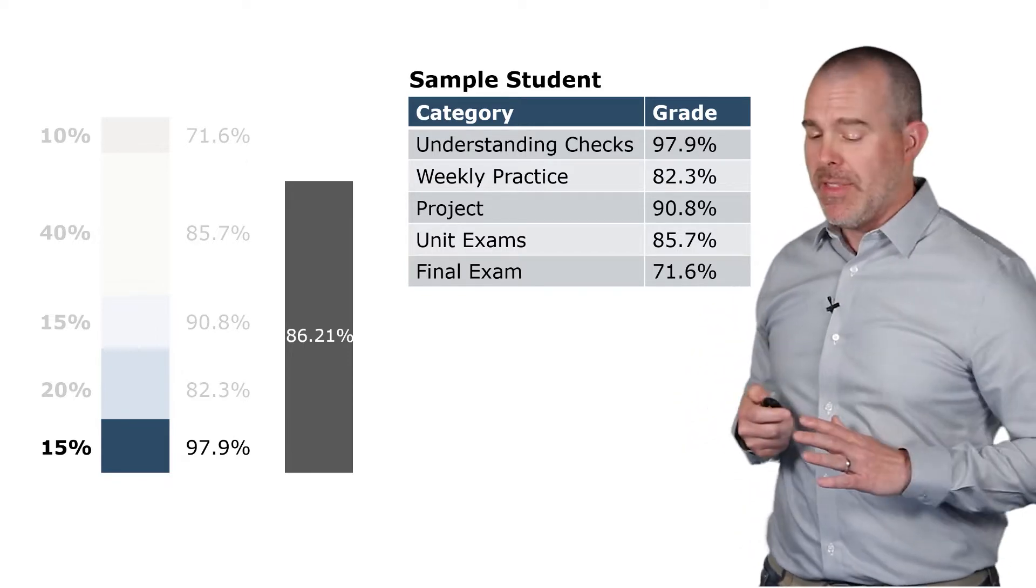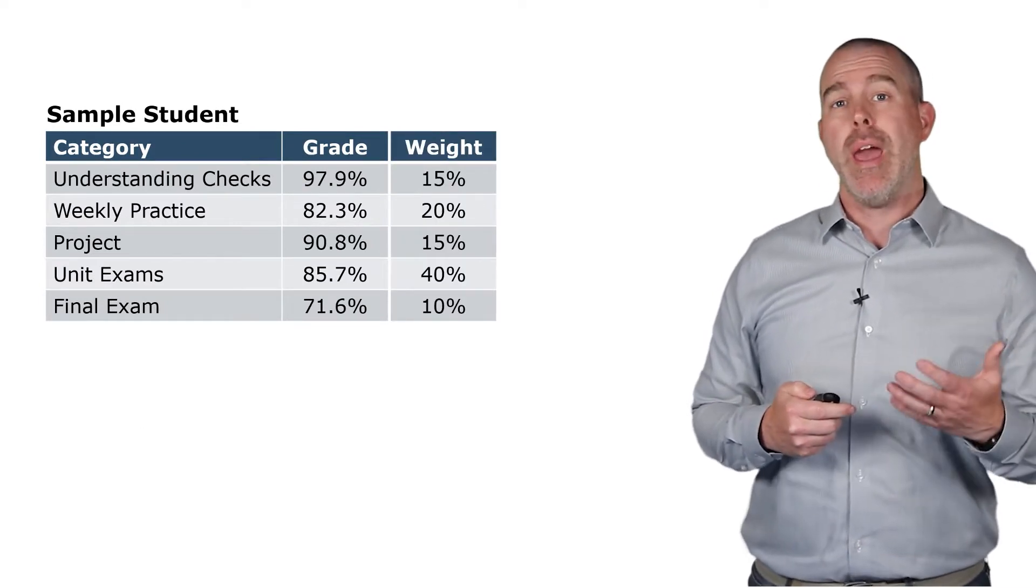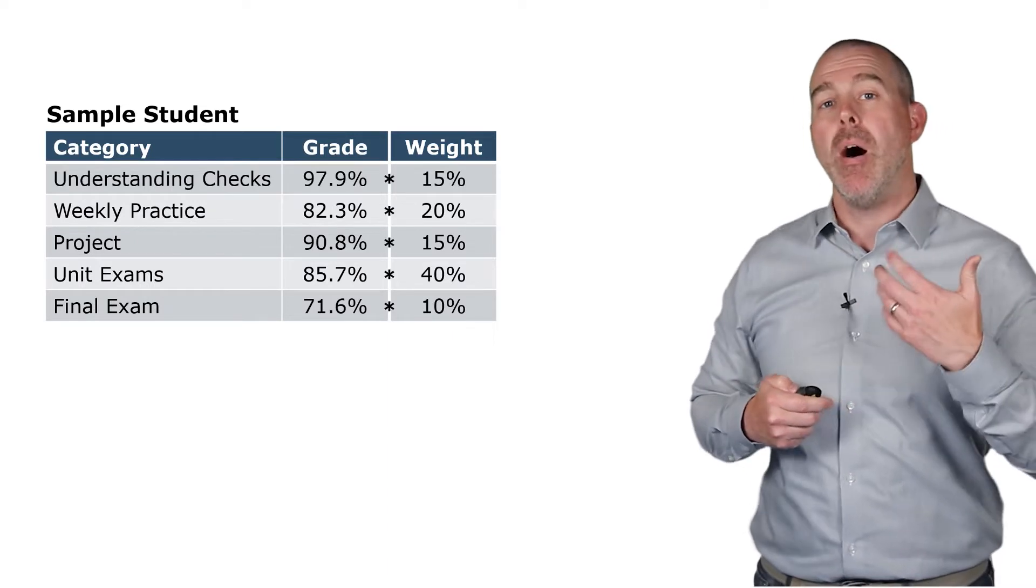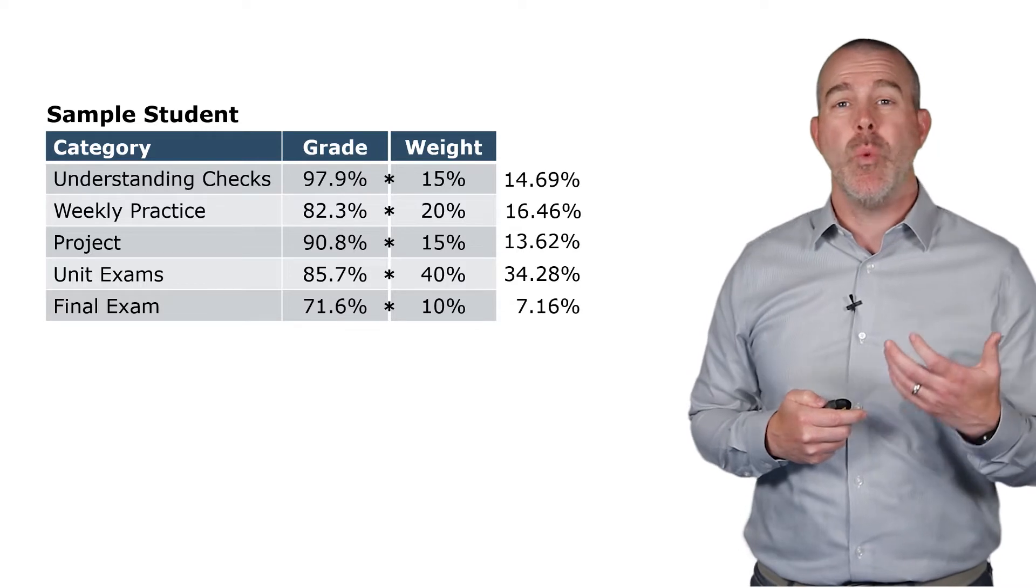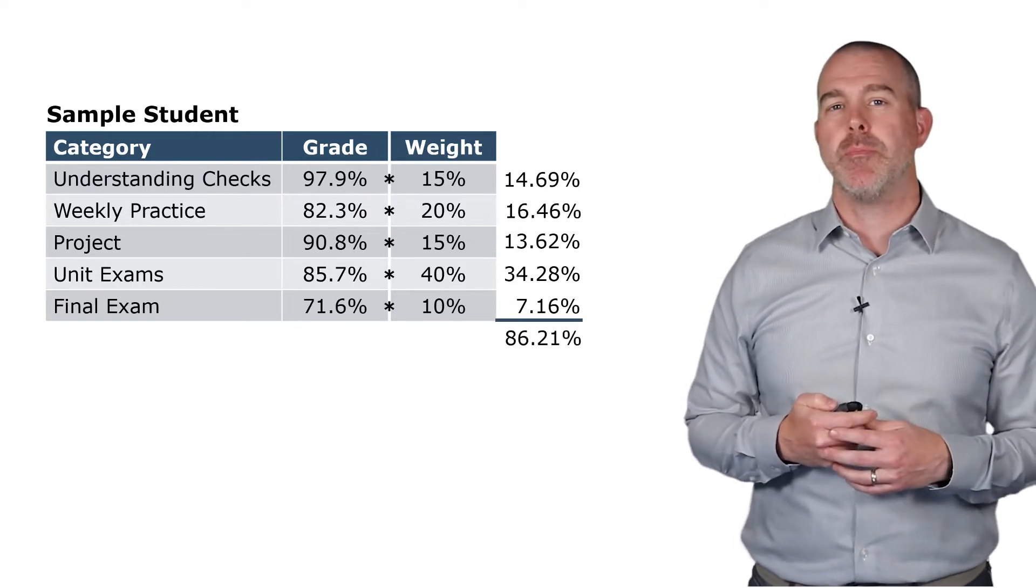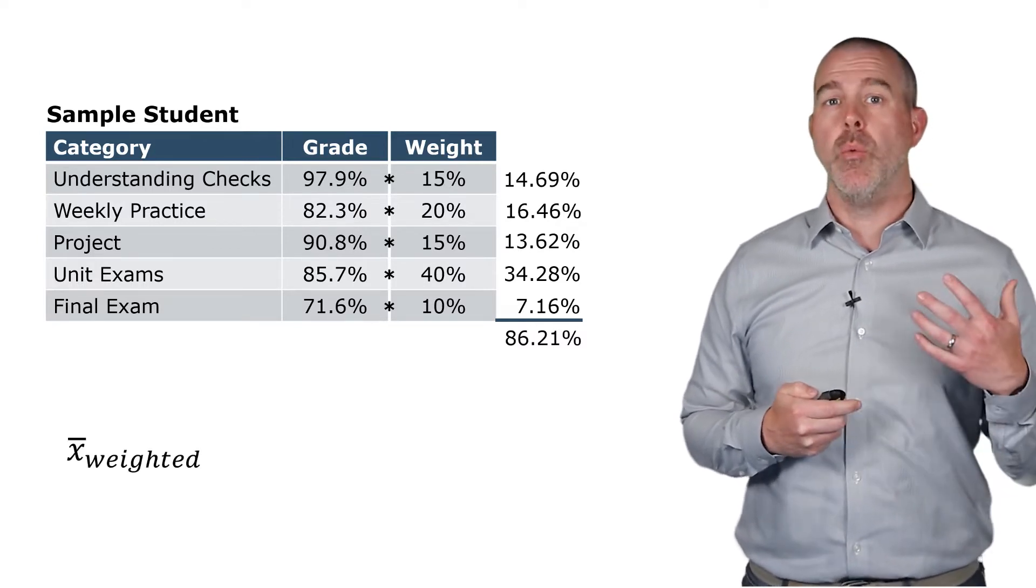Here's how this would work. If we have the table, what we're going to do is add another column with the weight from the different category. That's what that category is weighted. And then we'll multiply them. We multiply the grade by the weight. We get this weighted portion. We add all of those up and we get the 86.21% overall. This is called the weighted mean.